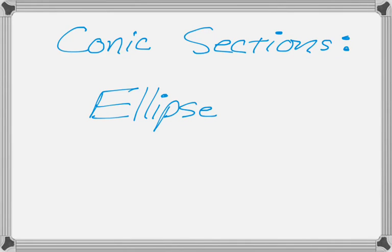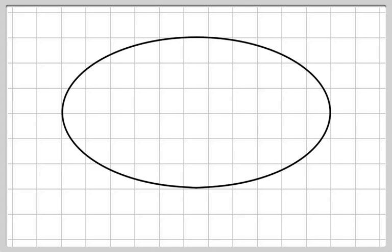Alright, in this video we're going to talk about one of the conic sections, specifically the ellipse. So let's take a look at one. There you go. Prior to learning about an ellipse, you might have thought of this as an oval. We're going to learn some geometric properties of it, and how to graph it specifically is going to be our focus here.